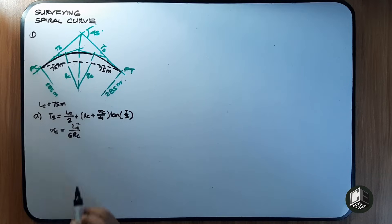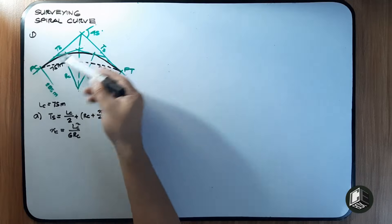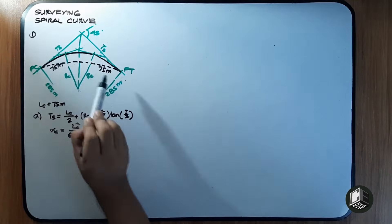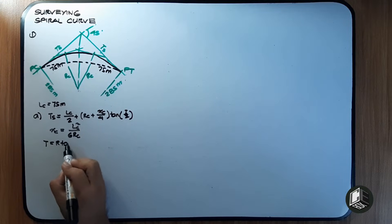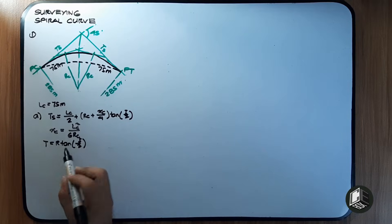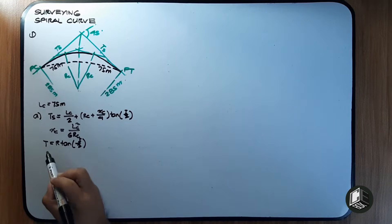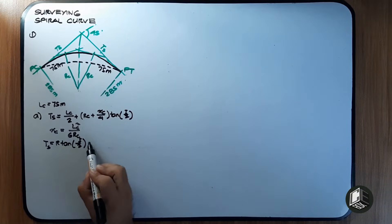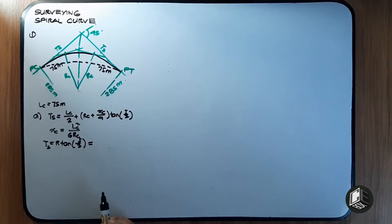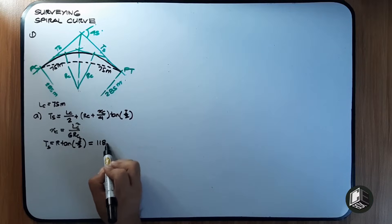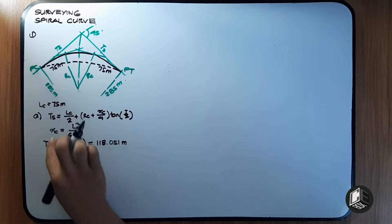The tangent Ts of the original curve equals R × tan(i/2), same as for a simple curve. Using R = 285 meters and i = 45 degrees, we compute Ts = 118.051 meters. This Ts value will be used in the Ts equation for the spiral curve.